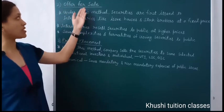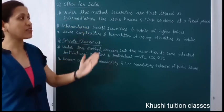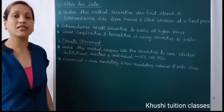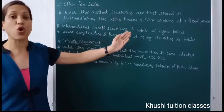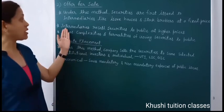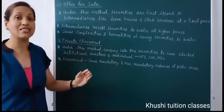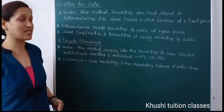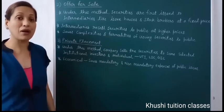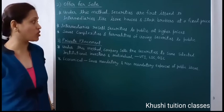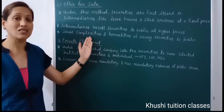The second method is offer for sale. Under this method, securities are first issued to intermediaries like issue houses and stock brokers at a fixed price. Instead of a direct public issue, the company sells securities to issuing houses or stock brokers. These intermediaries then resell the securities to the public at higher prices. This saves the company from the same complexities and formalities of issuing securities directly to the public, saving time, effort, and money.